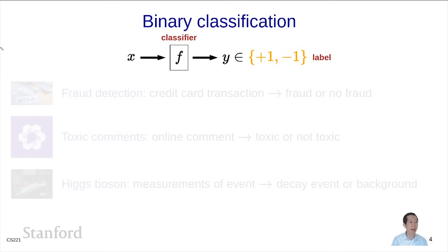Here are some examples of binary classification problems. There's fraud detection, where x is a credit card transaction, and you're trying to predict y whether there's fraud or no fraud, so the transaction can be blocked or not.